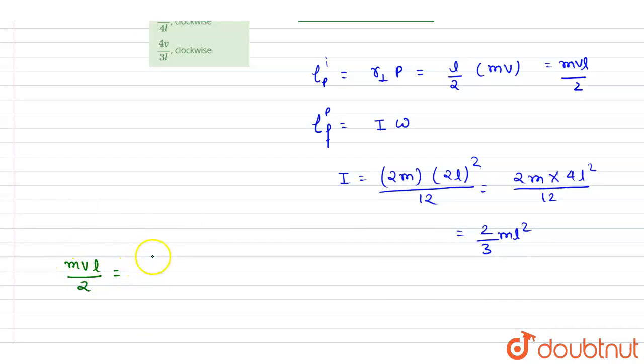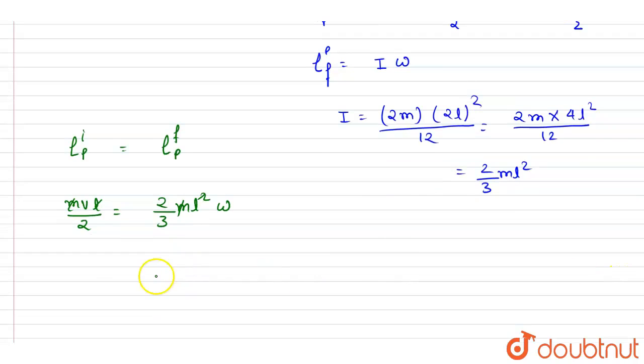I will write down mvl by 2, that is the initial angular momentum about point P, equals the final angular momentum about point P, which is 2 by 3 ml squared omega. So m will get cancelled out, l will get cancelled, omega is there, so this 2 by 3 will get multiplied as 3 by 2, so it will be 3 by 4 v by l.